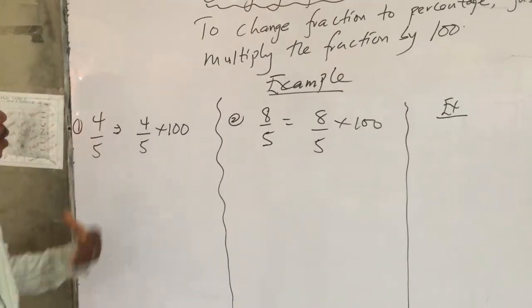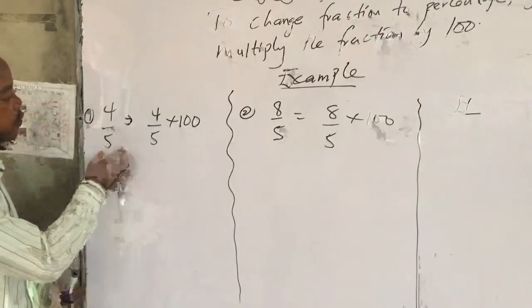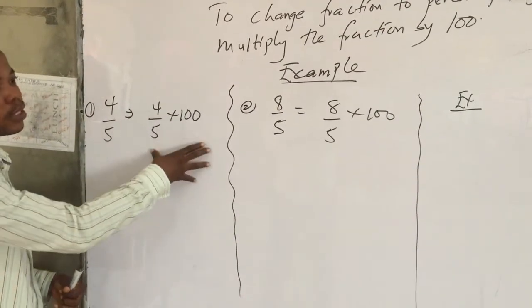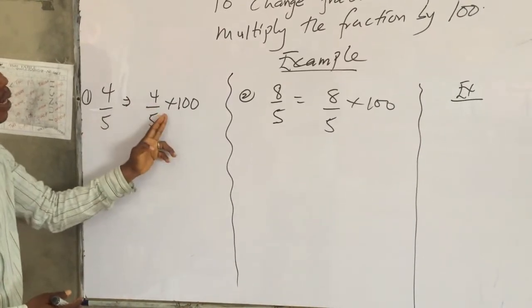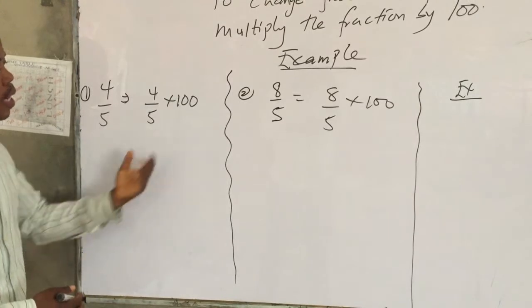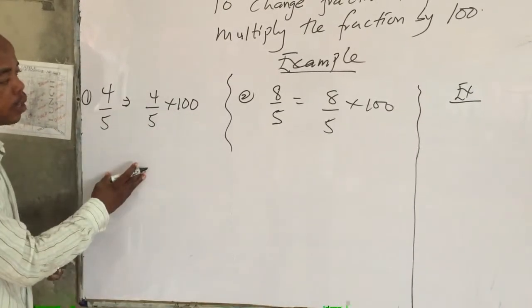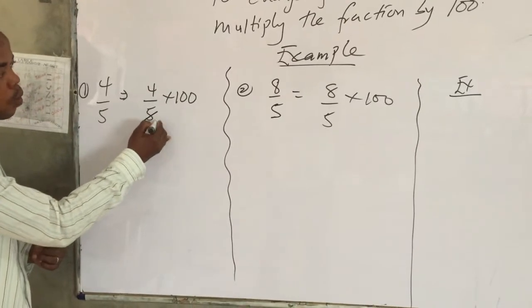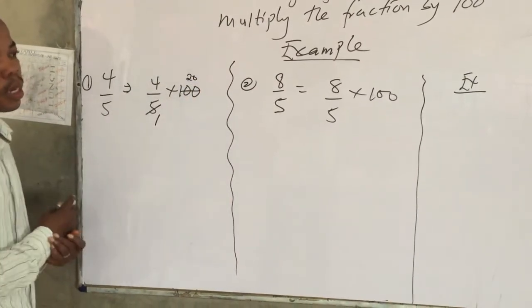Good. Now, let's do the first example. I have 4 over 5. I want to change this 4 over 5 to a percentage. So, I have 4 over 5, I will multiply it by 100. Then we get an answer in percentage. So we can cancel it. The 5 can go here 1. Then 5 will go into 100, 20. I hope it is clear.